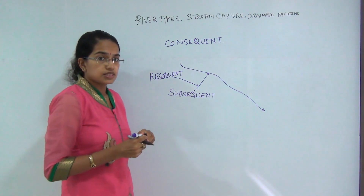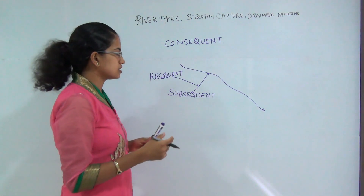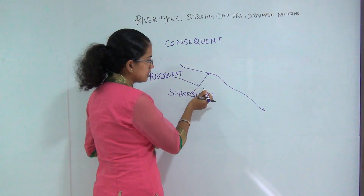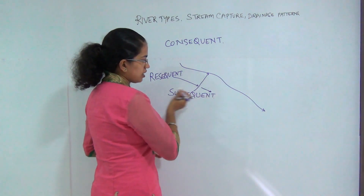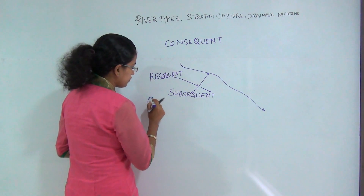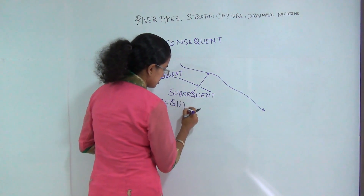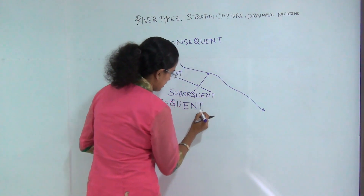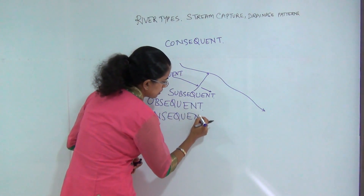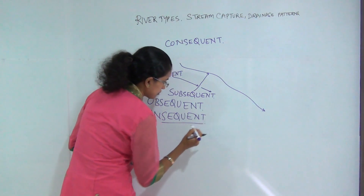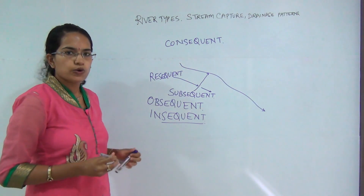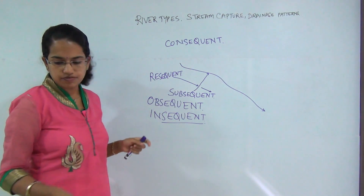There can be some streams which run opposite to the main stream — rather than running in the same direction, they run opposite or away from the main stream. These would be the obsequent streams. Finally, you have the insequent streams, which are immaterial to the direction of slope and do not have a fixed pattern. So these are the five types of streams.